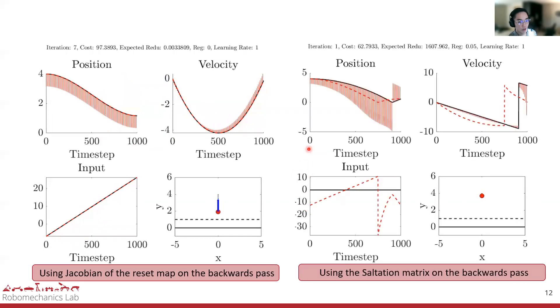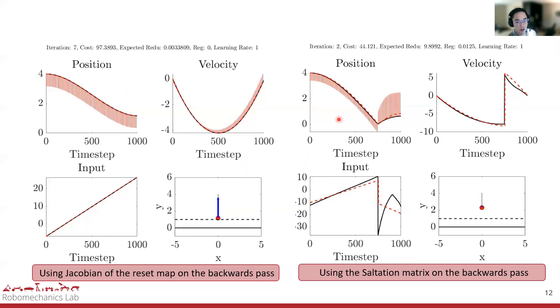Whereas when we use the saltation matrix, the gradient information is correct, pushing down before contact and up afterwards, and is able to actually find the optimal solution now. This answer matches the one produced through hybrid collocation.